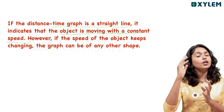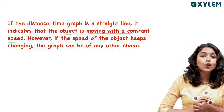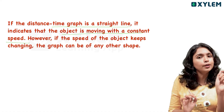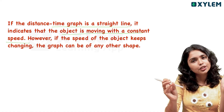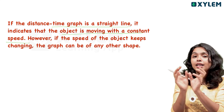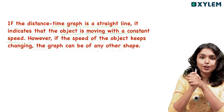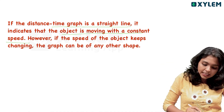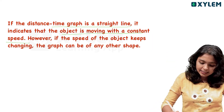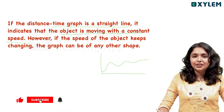If the distance-time graph is a straight line, that indicates that the object is moving with a constant speed. If you want to see a constant speed, you can see that the distance increases uniformly, giving a straight line on the distance-time graph.